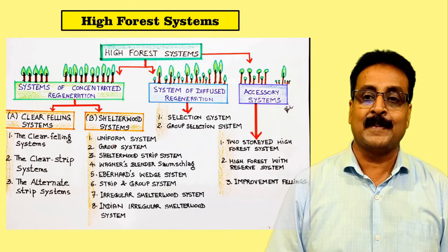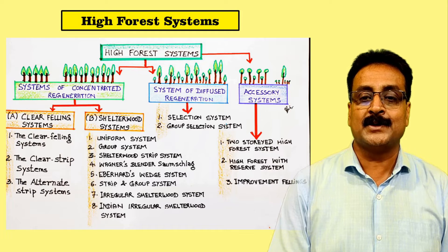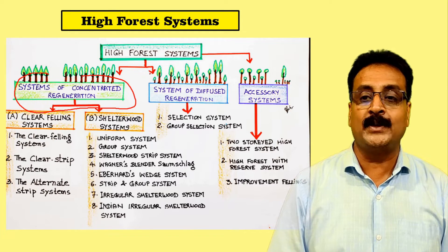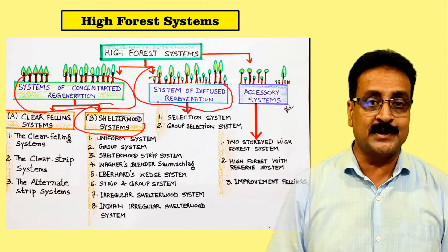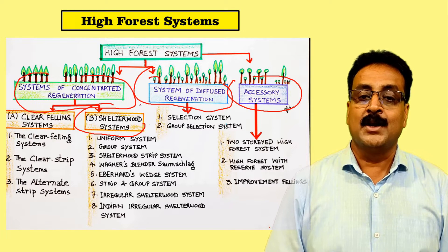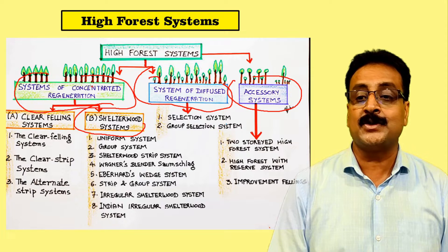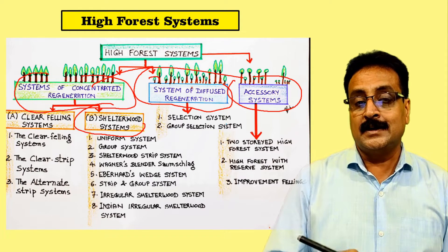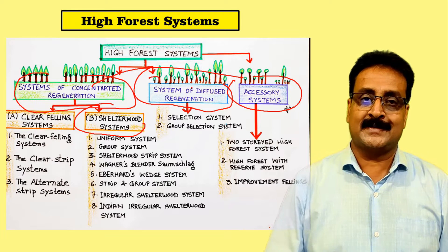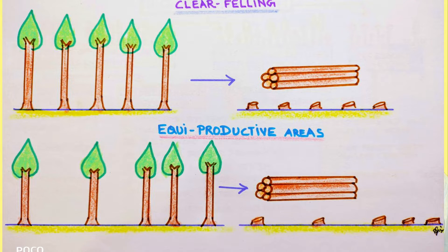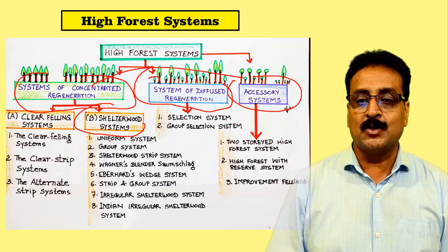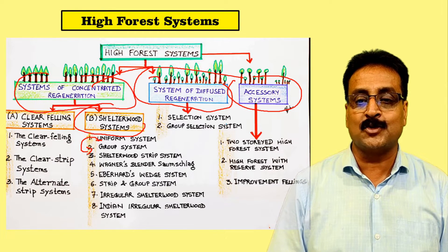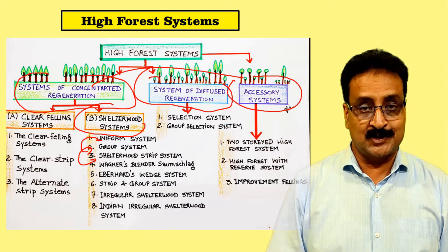We have studied the system of concentrated regeneration and are now on the shelter wood system. Then there is the system of diffuse regeneration and accessory systems. As we go from concentrated to diffuse regeneration, operations become progressively complex. The clear felling system for light-demanding species is simple, but the shelter wood system becomes more complex — from uniform system to group system, then shelter wood strip system.